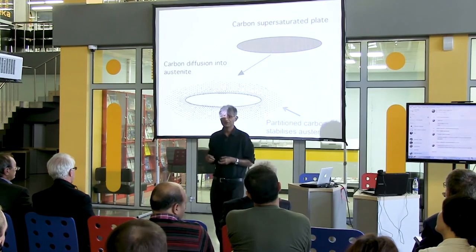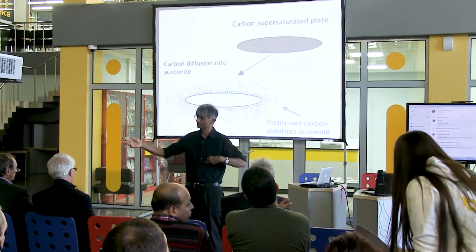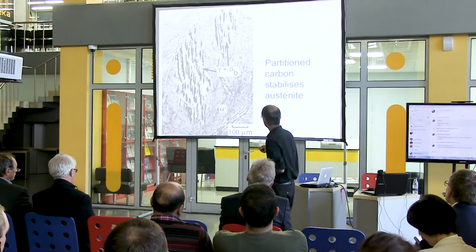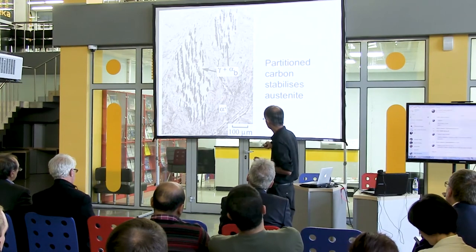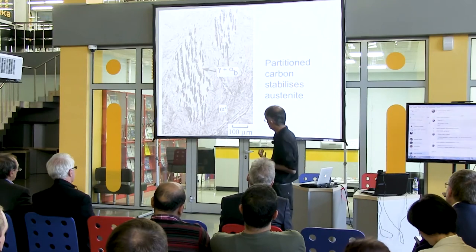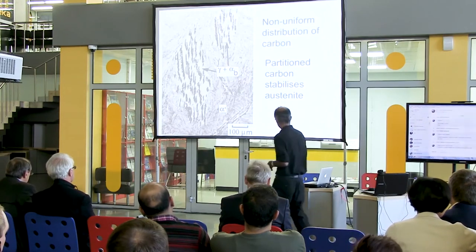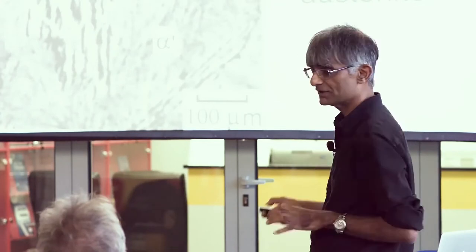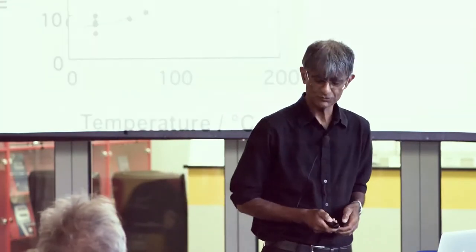When this happens, it requires time for carbon to diffuse. So the region around the bainite plate is rich in carbon, but away from it, it's not. What you produce is a distribution of carbon which is not homogeneous. Near these plates of bainite, we have austenite retained because carbon has partitioned. But away from it, you've got martensite when you cool the material. And that is very bad for properties because this is untempered martensite.